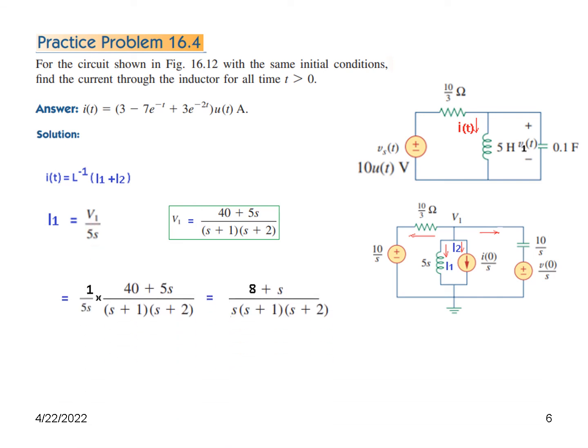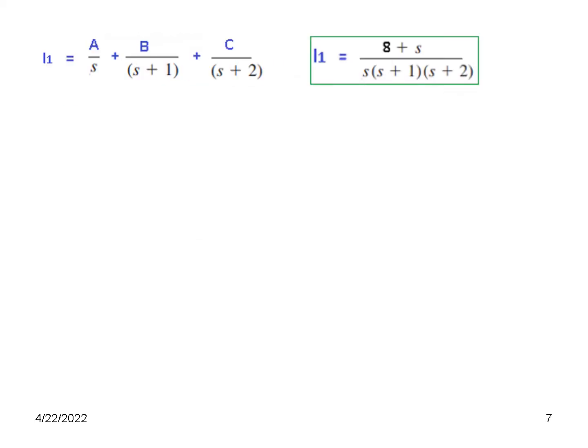Now you can see there are three terms in the denominator. Partial fraction will have three values: A, B, and C. So this is I_1 in the form of a fraction. And this was the total value of I_1.